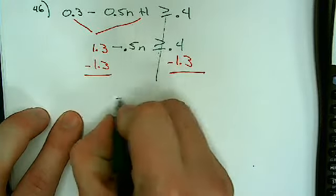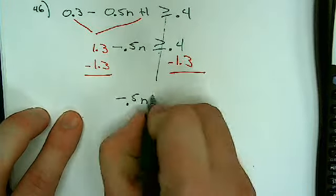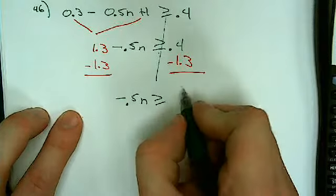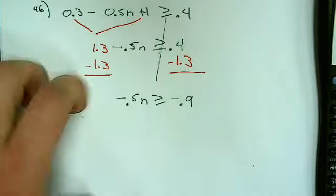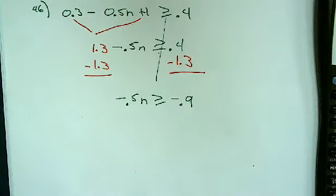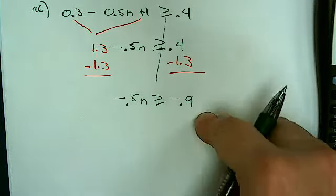So this cancels, leaves me negative 0.5n, greater than or equal to, gives me a negative 0.9, I believe. Yes.